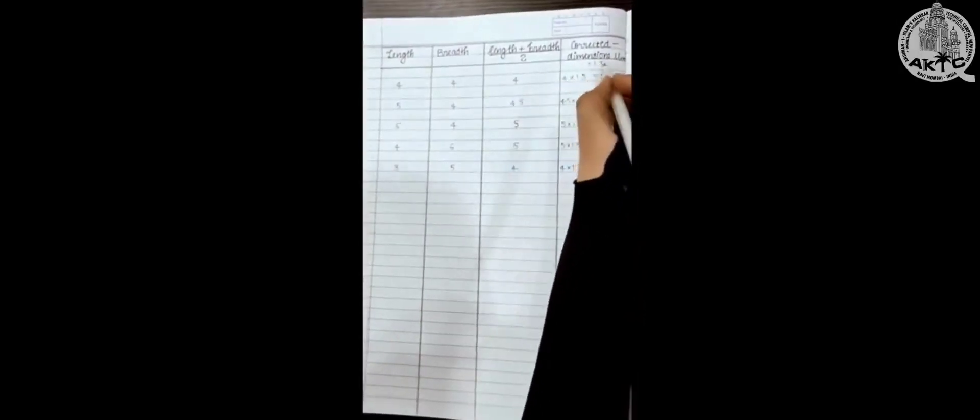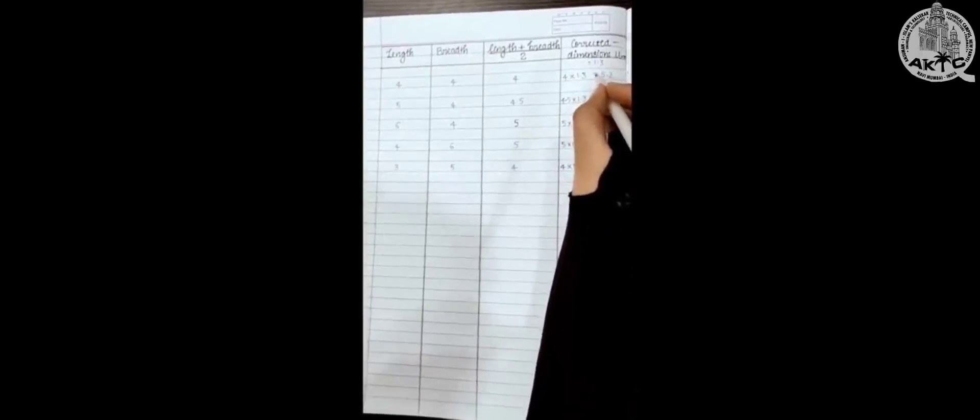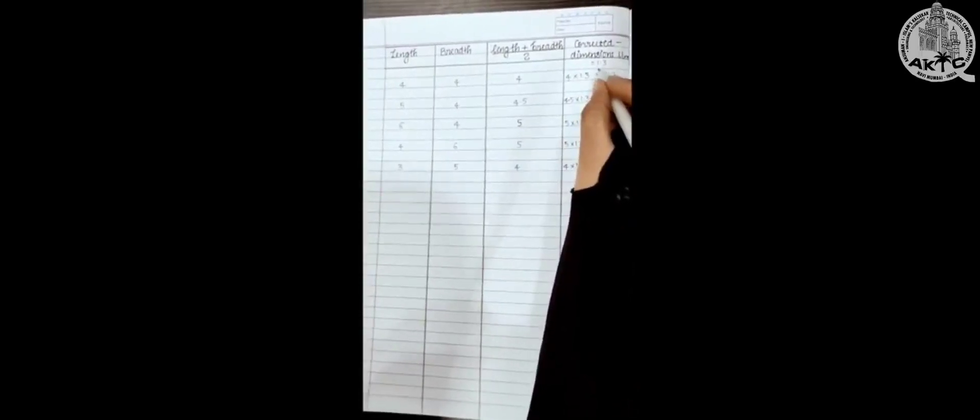Then we have to find corrected dimension by multiplying it with 1.3. Here 1.3 is the value we got after calibration of ocular micrometer and stage micrometer. So after multiplying this with 1.3 we get 5.2. Like this we have to take 20 readings.